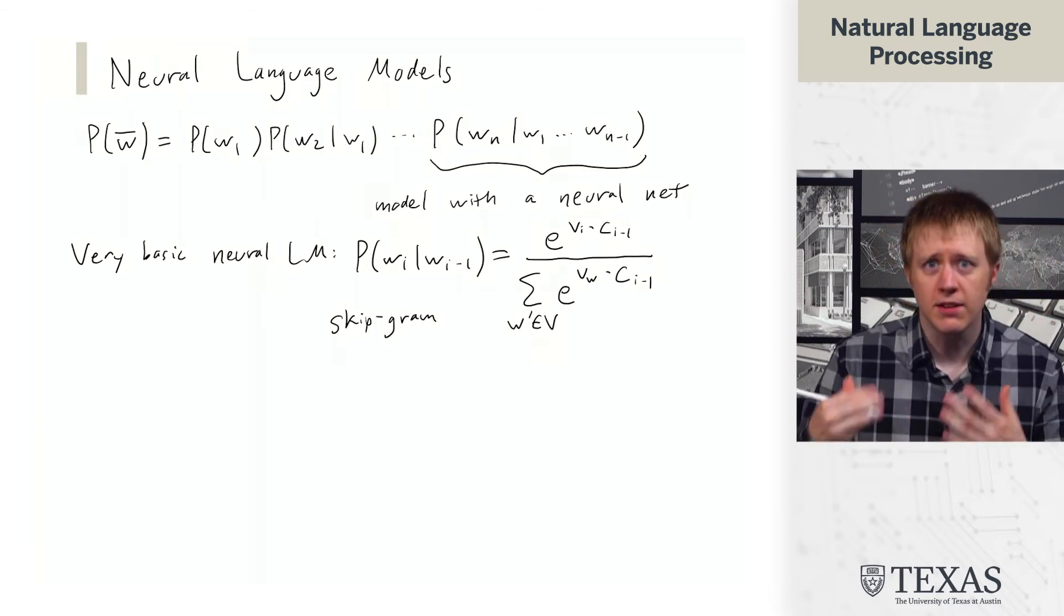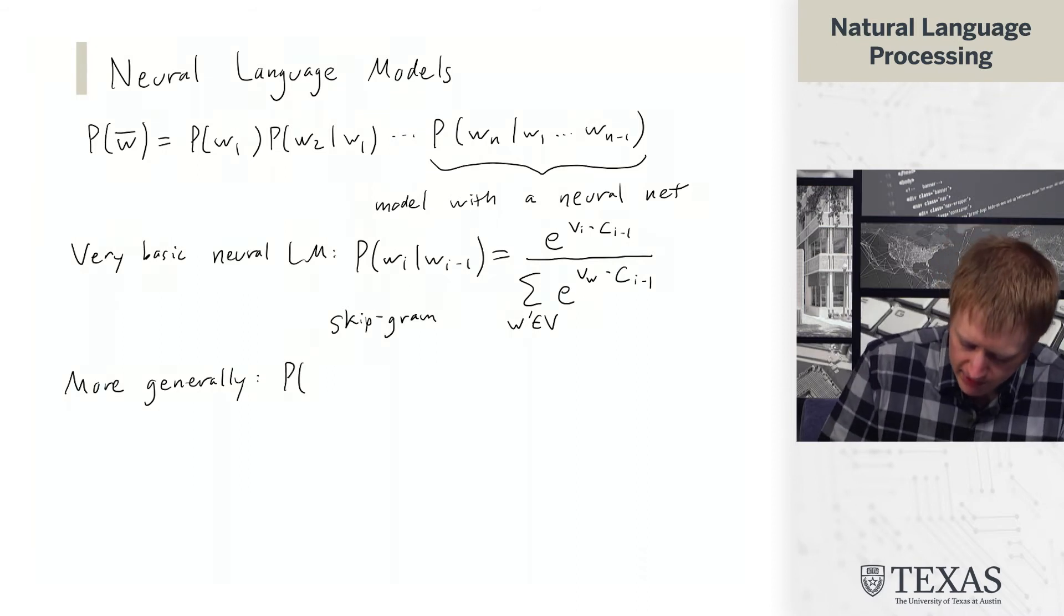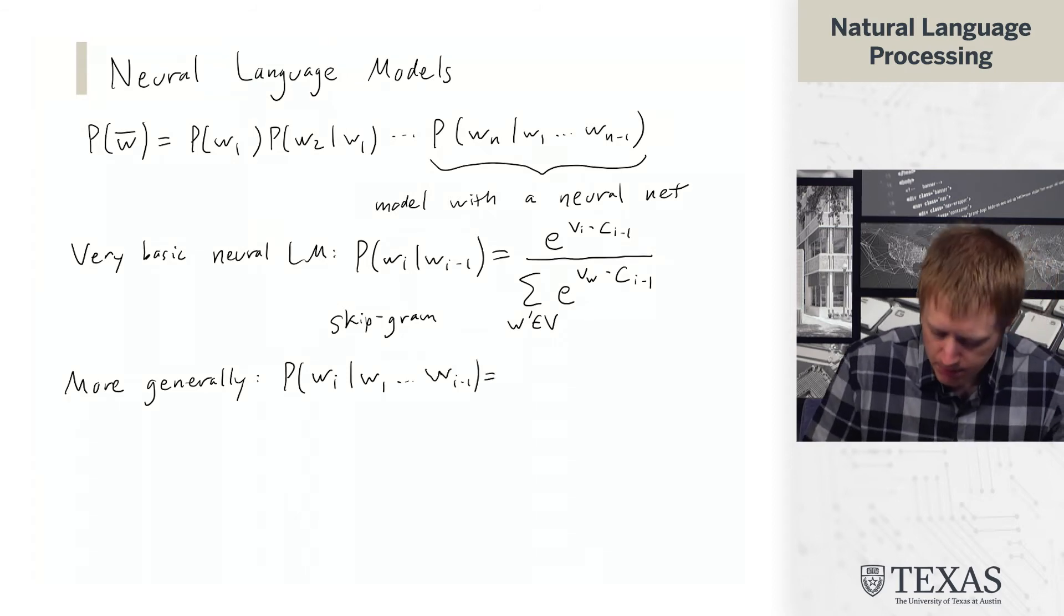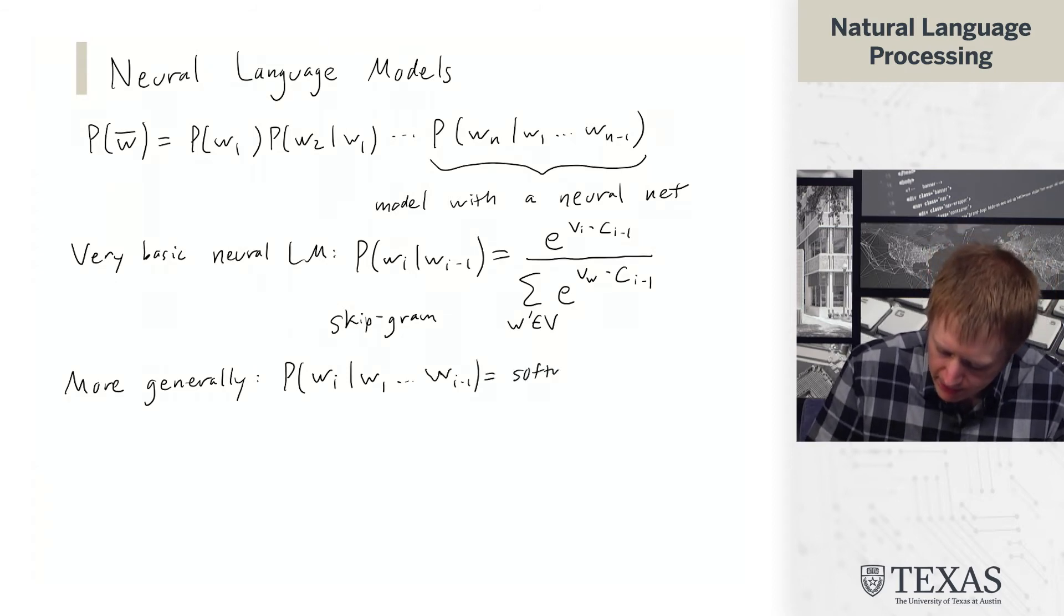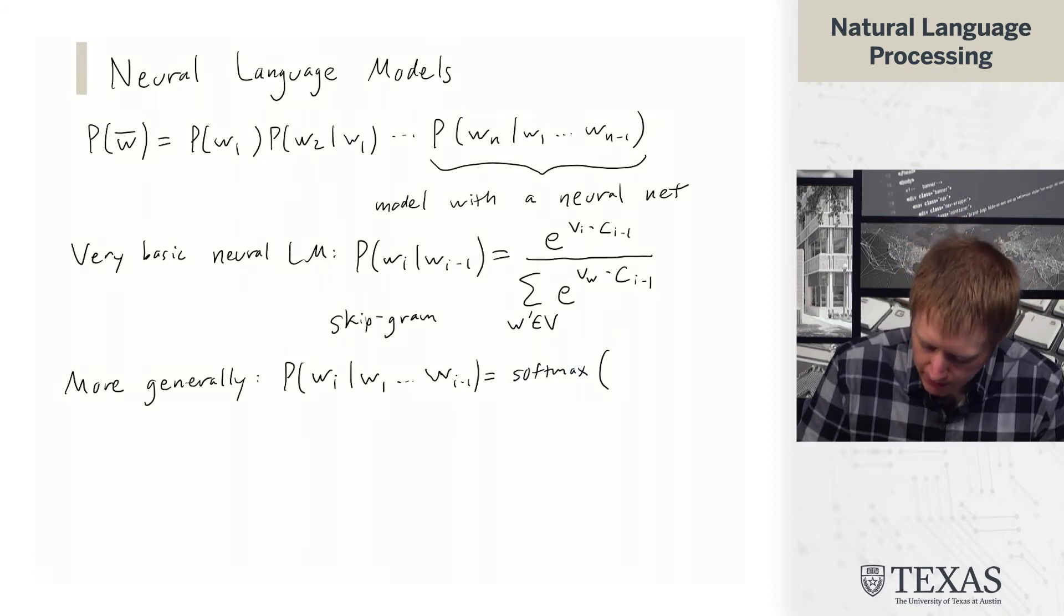But this gives you an idea of the kind of way we can approach this. And so more generally, the way we can parameterize this is like PWI given W1 through WI-1 might be a softmax of, I'm going to write UWI here, dotted with some function of W1 through WI-1.